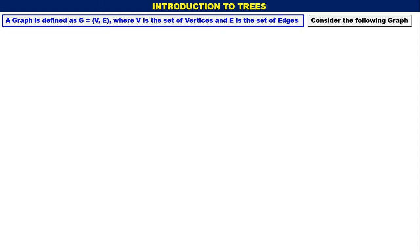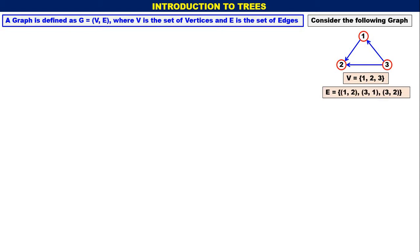Consider the following graph. There are three vertices: 1, 2, and 3. There are three edges also: 1 to 2 there is an edge, 3 to 1 there is an edge, 3 to 2 there is an edge. Therefore, three vertices and three edges are there in the graph. We shall call this as Graph 1.